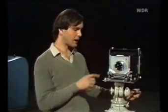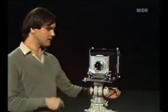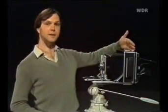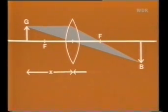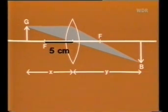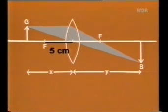Im Prinzip stellt das Objektiv unseres Fotoapparates nichts anderes als eine Sammellinse dar. Diese Sammellinse liefert ein Bild des Gegenstandes in der Ebene der Mattscheibe, wo man eine fotografische Platte einlegen kann. Hier die Sammellinse in einer Skizze — F ist auf jeder Seite jeweils der Brennpunkt. Ein Gegenstand G wird bei gegebenem Abstand als Bild abgebildet. Bezeichnen wir den Abstand des Gegenstandes mit x, den des Bildes mit y, und die Brennweite beträgt in unserem Fall 50 Millimeter, also 5 Zentimeter. Bei gegebener Brennweite und bekanntem x lässt sich die Bildweite nach der Linsengleichung berechnen.